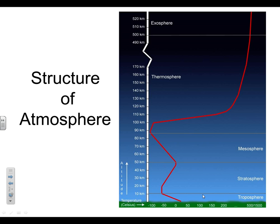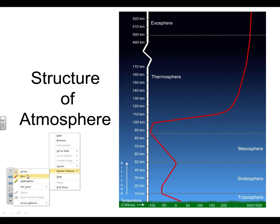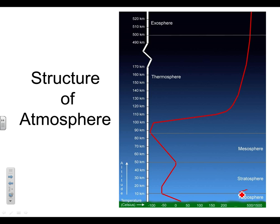Lots of times when you see big anvil head clouds and flat top clouds, that is at the boundary between the troposphere and stratosphere — they flatten off there. Label that boundary the tropopause. That's T-R-O-P-O-P-A-U-S-E. It's just the boundary between the troposphere and stratosphere.